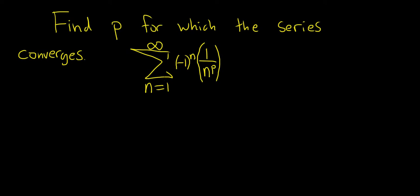Hello, in this video we have to find the values of p for which the series converges. So to do this we're going to use the alternating series test. The alternating series test says that we first have to identify our a sub n. So a sub n is always the non-alternating part, so in this case it's the part without the negative 1 to the n, so 1 over n to the p.